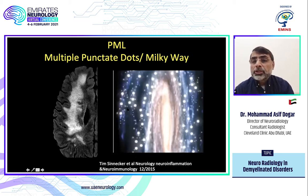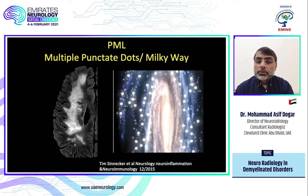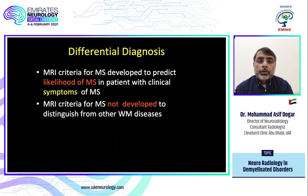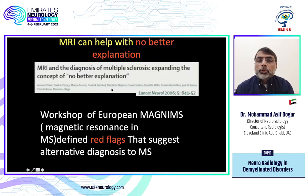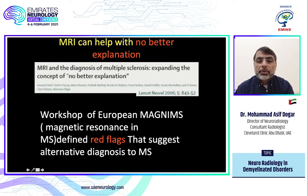If you have a case of MS you are following and wondering if it is tumefactive demyelination or PML, look for the milky way sign. The MAGNIMS group met in 2016 and came up with red flags for the differential diagnosis of MS — a useful reference for when there is no better explanation.